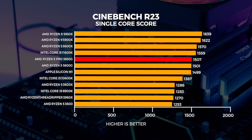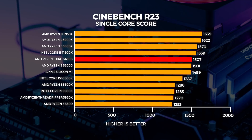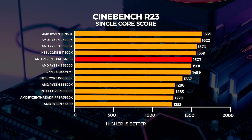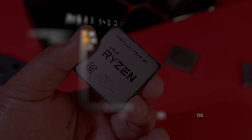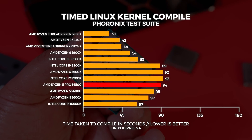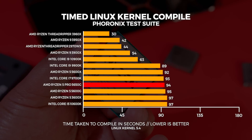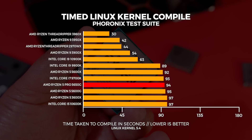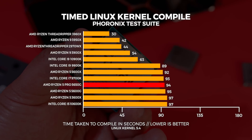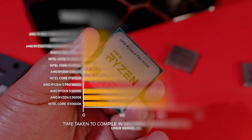This Cinebench result is not something we're going to see consistently with the 5650G. How about a test that most people overlook when testing new CPUs — a timed Linux kernel compile test. This test was run with an older Linux kernel, as the majority of CPUs we've already tested were benchmarked compiling this same version of the kernel.